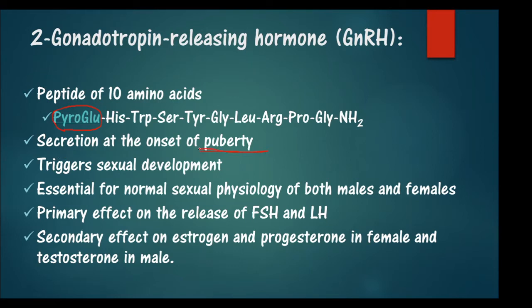GnRH shows the sexual maturation and is important for triggering sexual development. It is essential for the normal sexual physiology of both males and females. The primary effect is on the release of follicle stimulating hormone (FSH) and luteinizing hormone (LH), whereas the secondary effect is on the synthesis and secretion of estrogen and progesterone in females and testosterone in males.